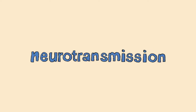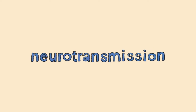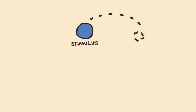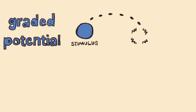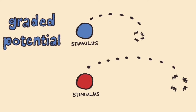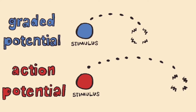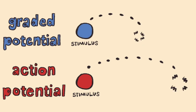The focus of this video is neurotransmission, going from a stimulus to a short-distance, relatively weak electrical signal, which is a graded potential, to a long-distance, relatively strong electrical signal, which is an action potential. This is how your nervous system conveys information through your body.